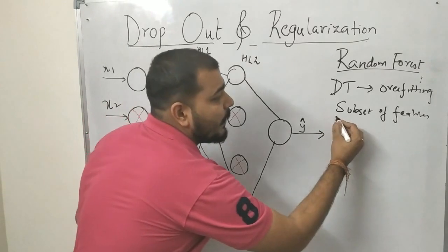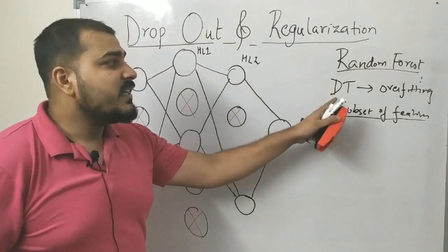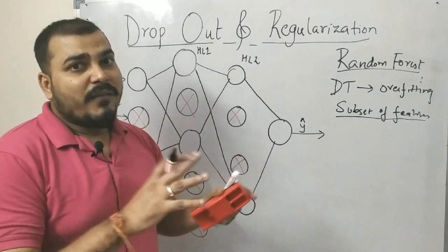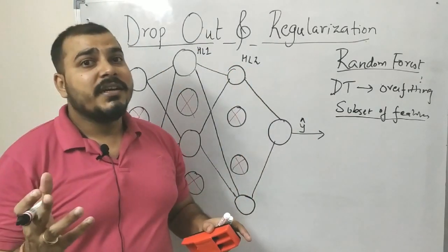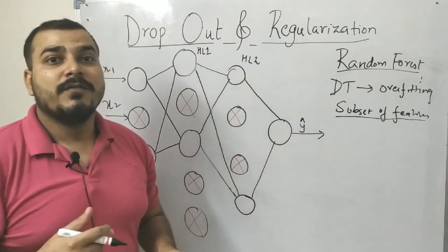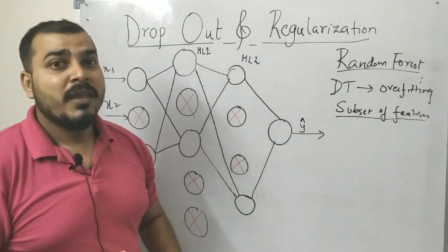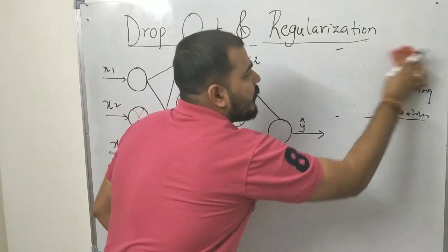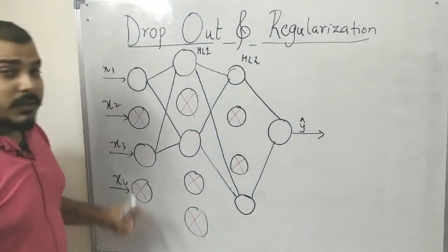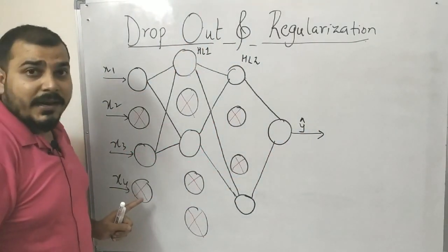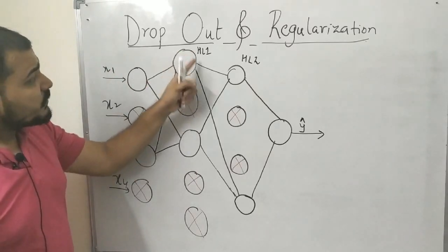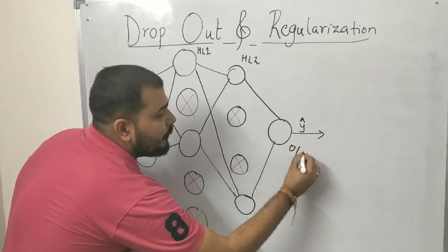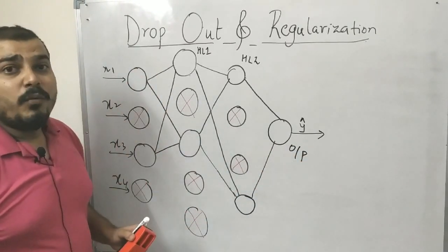The reason I discussed random forest is that you should understand this concept of subset of features — we create each decision tree with a different subset of features, which act like independent features. Similarly, to implement dropout, consider a neural network with an input layer, hidden layer 1, hidden layer 2, and an output layer.